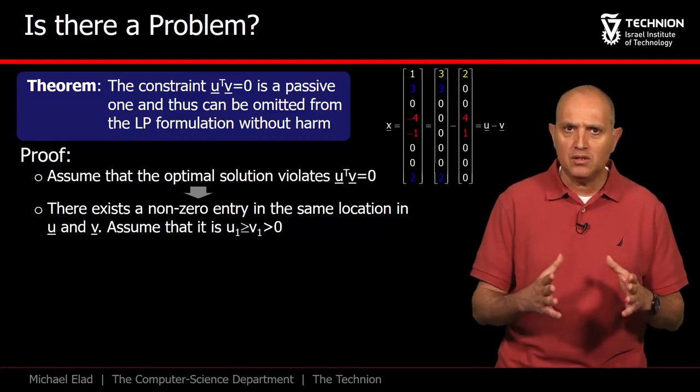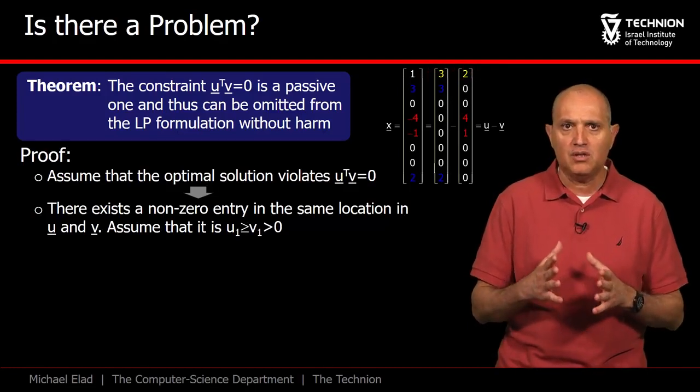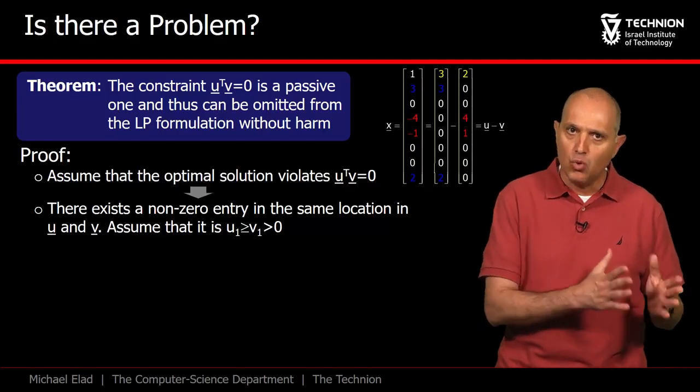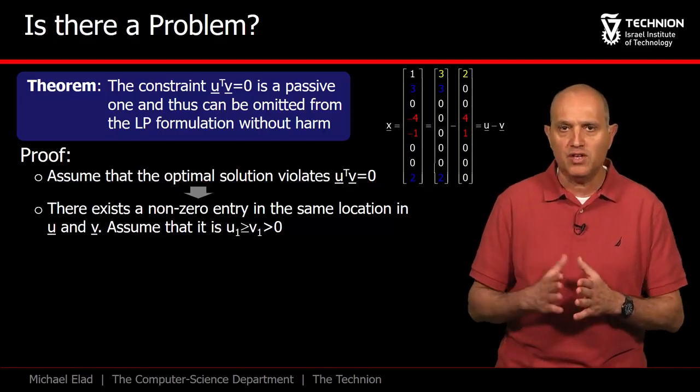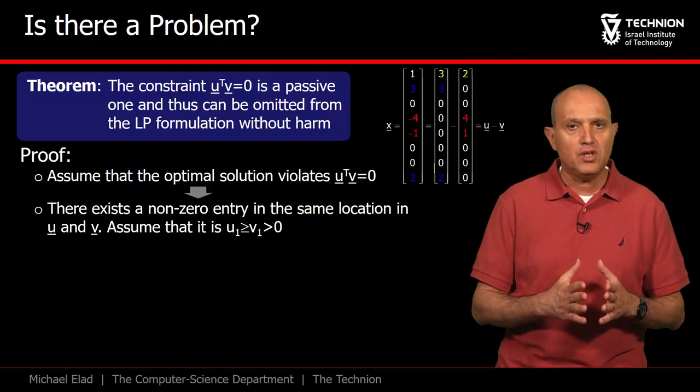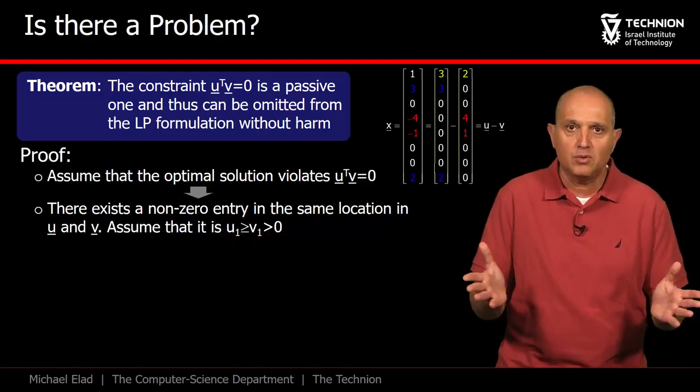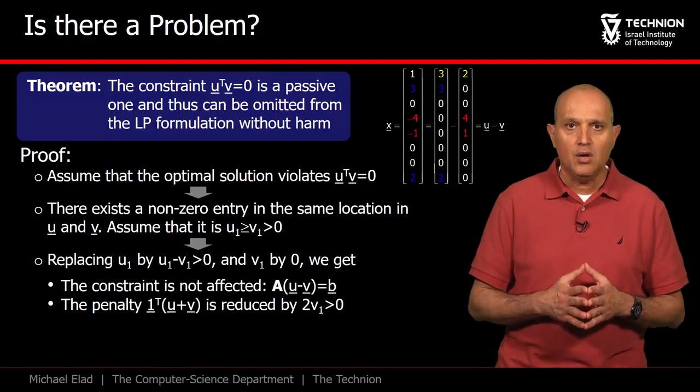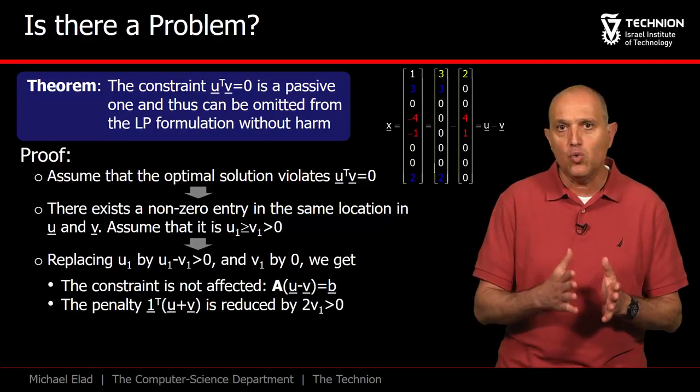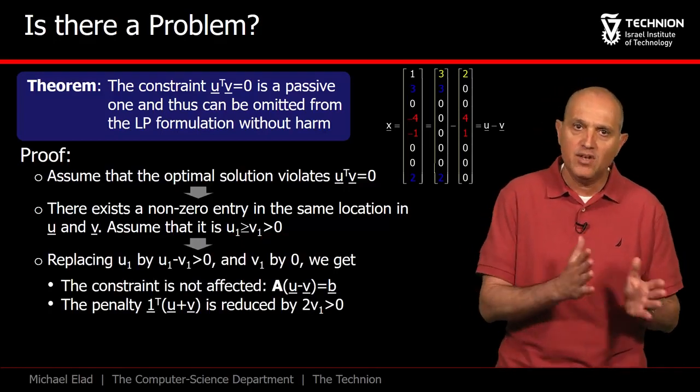Let's assume that it is the first entry causing this problem, with values u₁ and v₁ in these two vectors. We shall further assume that u₁ is bigger than v₁, and that v₁ itself is positive as well. In that case, we could replace u₁ by u₁ minus v₁, and replace v₁ by zero.